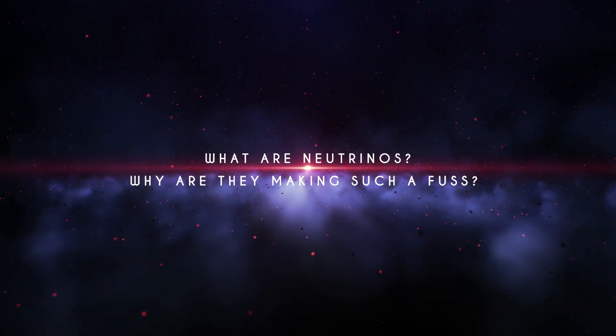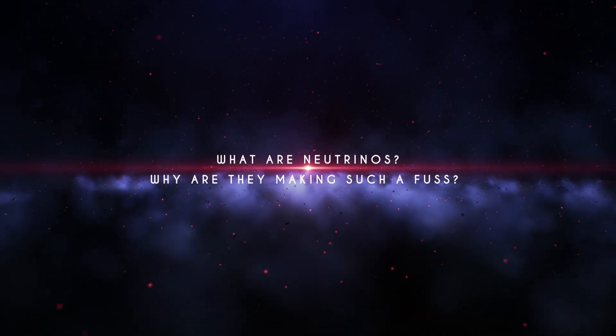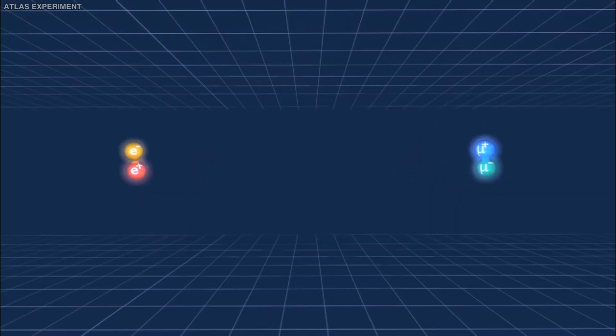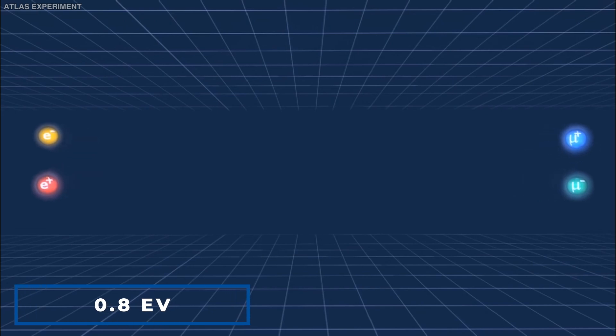But what are neutrinos? And why are they making such a fuss? Neutrinos have no charge. Their name indicates that they are neutral. While the mass of neutrinos has yet to be properly calculated, we know it must be exceptionally small. Scientists at the Karlsruhe Tritium neutrino experiment in Germany were able to determine the top limit of neutrino mass to be 0.8 electron volts, or EV.